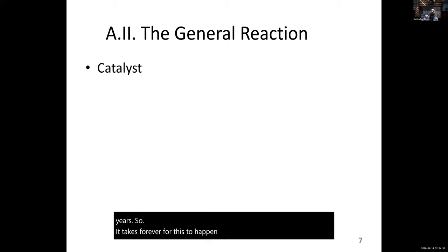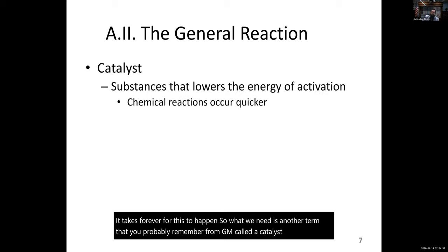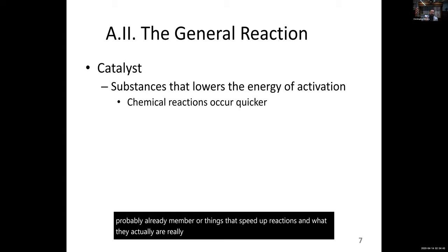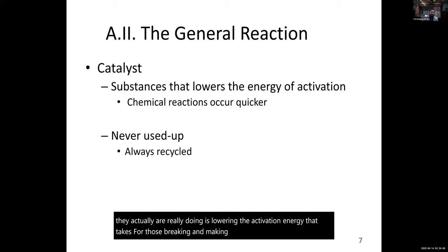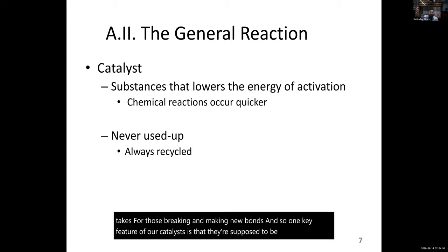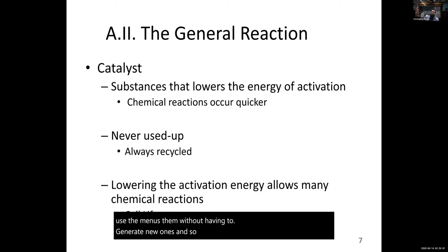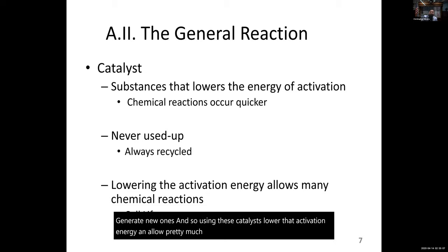What we need is another term from Gen Chem called a catalyst. Catalysts are things that speed up reactions by lowering the activation energy required for breaking and making new bonds. One key feature of catalysts is that they're recyclable — you can use them over and over without having to generate new ones. Using these catalysts lowers activation energy and allows reactions to occur within our lifetime, usually in the milliseconds to nanosecond time frame.